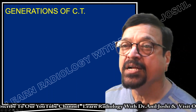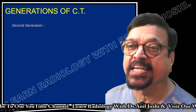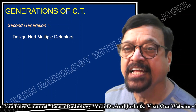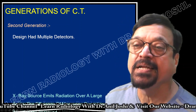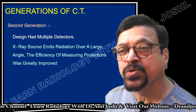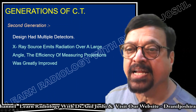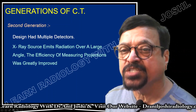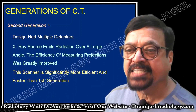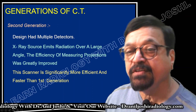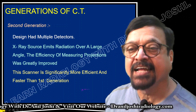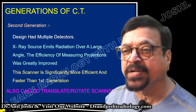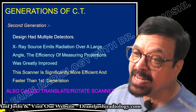Moving ahead to the generations of CT scan — in the second generation, the design had multiple detectors. The X-ray source emits radiation over a large angle. The efficiency of measuring projections was greatly improved and the scanner is significantly more efficient and faster than the first generation. So we call them translate-rotate scanners.